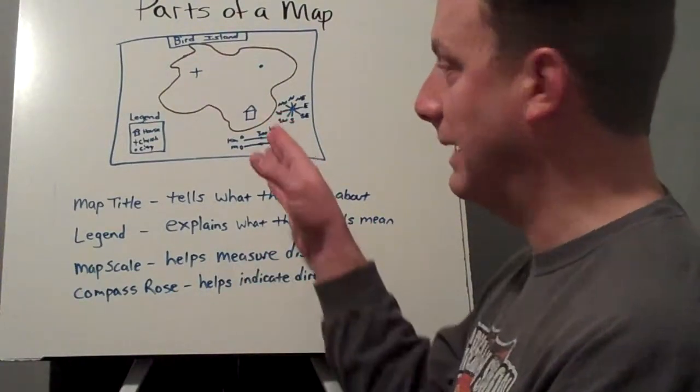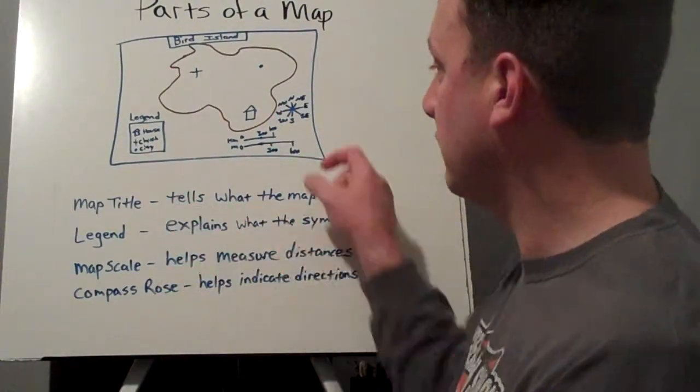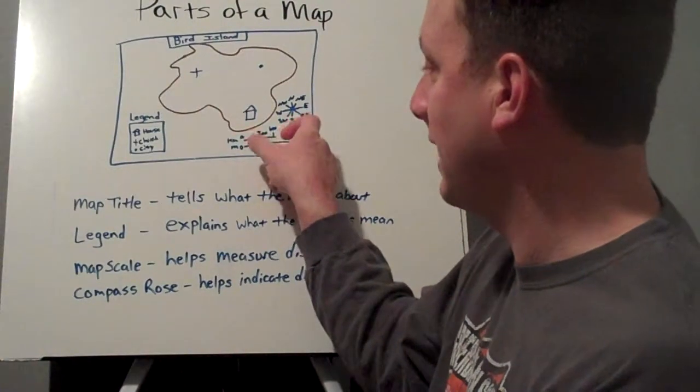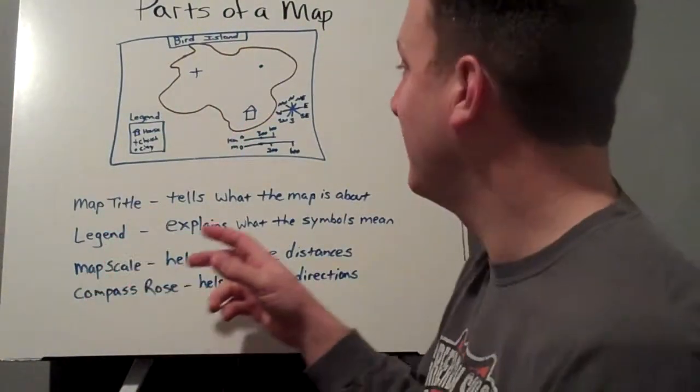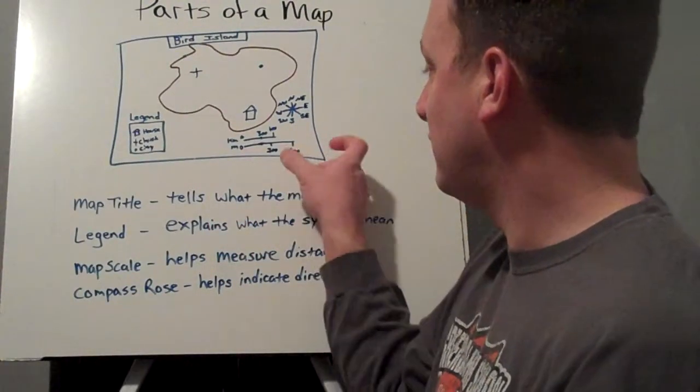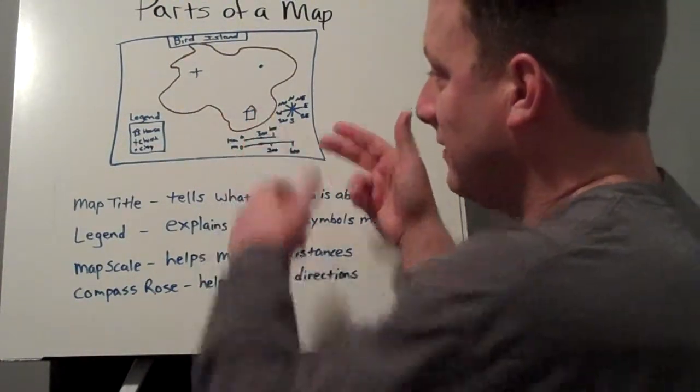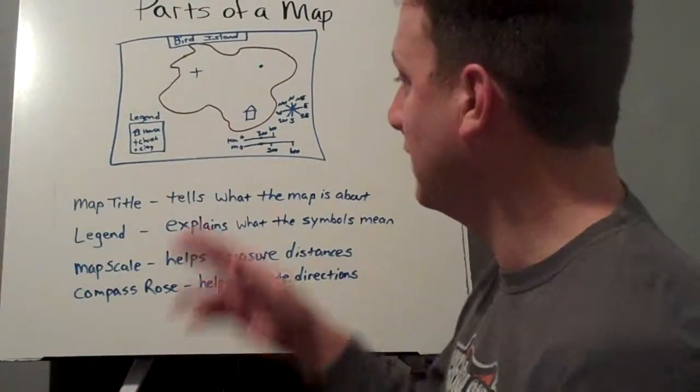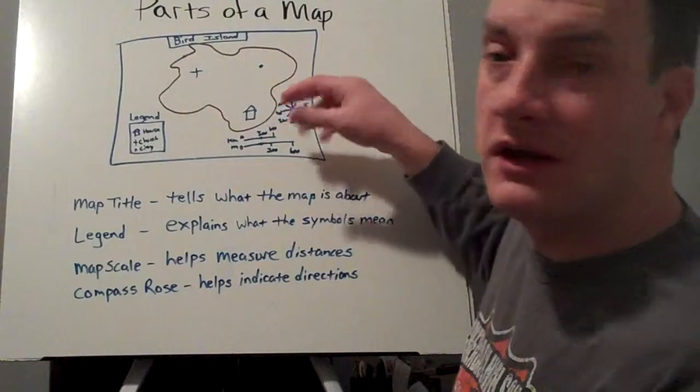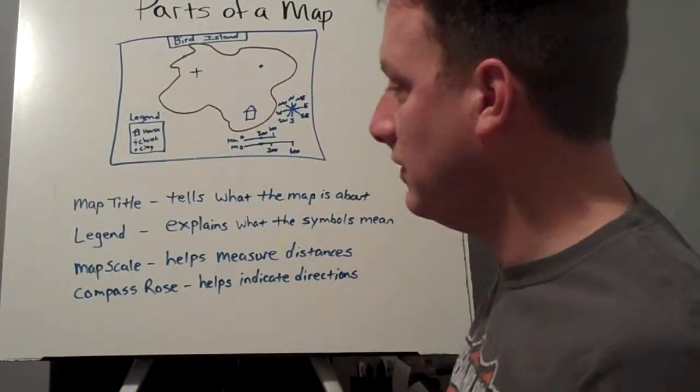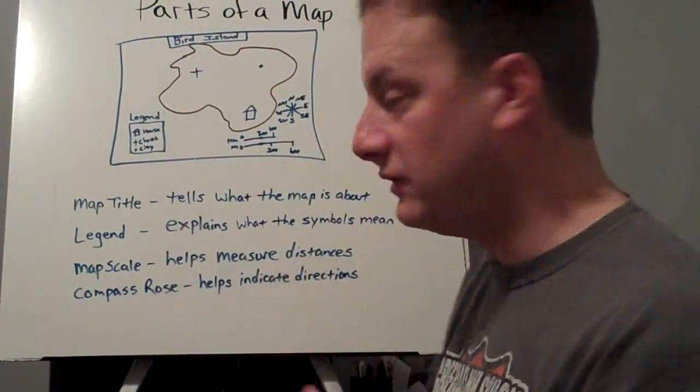All right, so map scales help us measure distances on a map. That's like, for example, if an inch on this map, that's going to equal 300 miles. If it's about an inch and a half or so, roughly guessing, that's going to be 600 miles. Okay, so map scales help us identify distance, and we've worked on this in class how to measure.